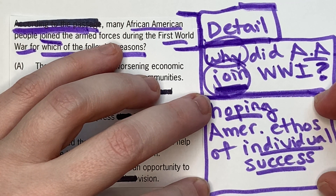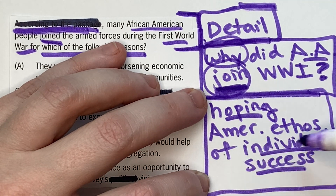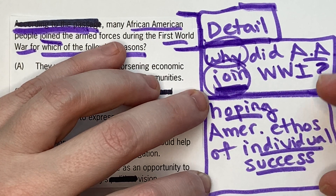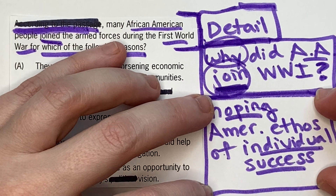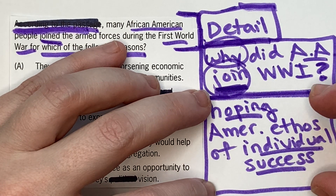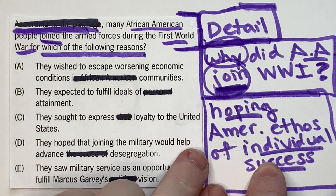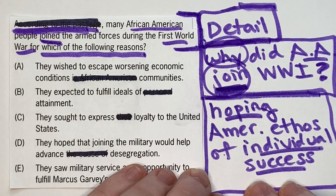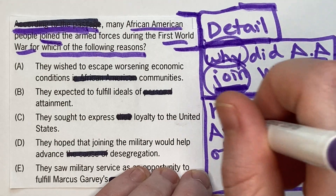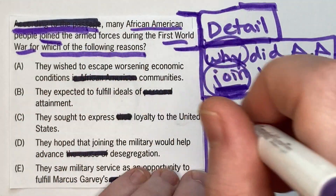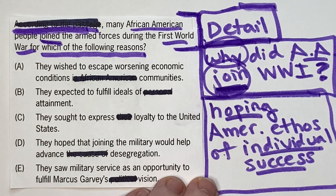So why did they join? They weren't joining hoping to suffer indignities — nobody wants that. They were joining because they hoped to be part of the American ethos of individual success. That answers the question 'why.' I call this the prediction — some people call it a pre-phrase — it's a summary of what the correct answer should look like. With it written on your scratch paper, you don't have to keep it in your head, worry about forgetting it, or second-guess yourself as you read the answer choices.